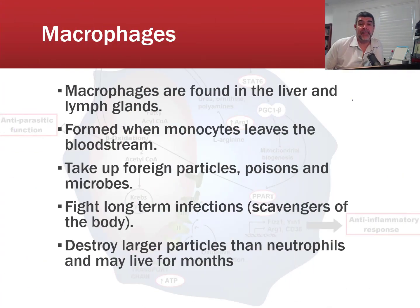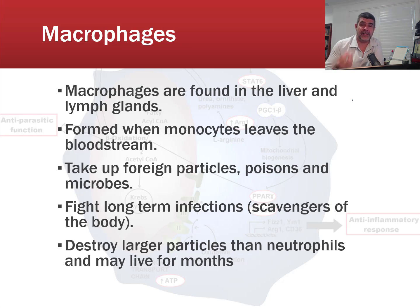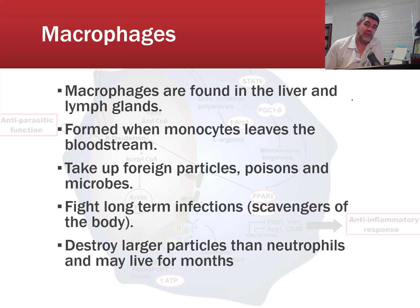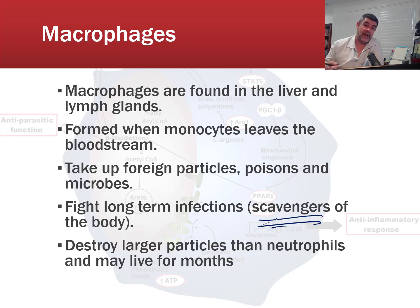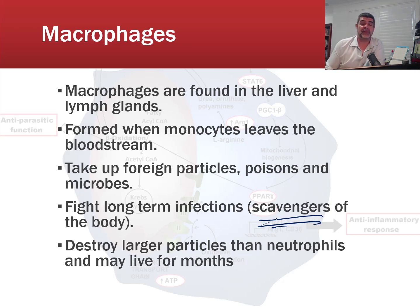The second group are macrophages, which tend to be found in the liver and lymph glands, and are formed when monocytes leave the bloodstream. 'Macro' means big and 'phage' relates to phagocytes — so these are the big munchers. They swallow poisons, chemicals secreted by pathogens, and the microorganisms themselves, fighting infection longer term. They are the scavengers of the body, coming in behind the neutrophils to clean up anything missed by that first wave. They can destroy larger particles and represent a much longer-term response.